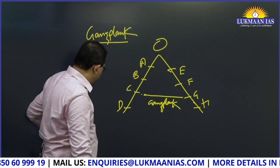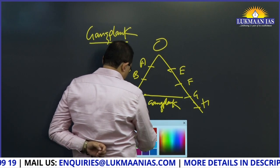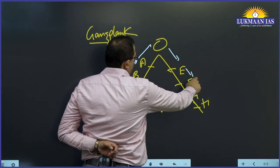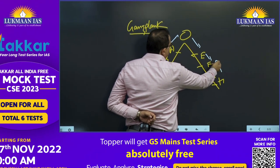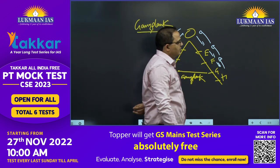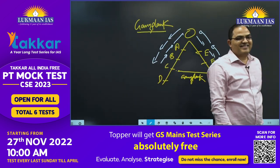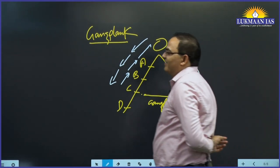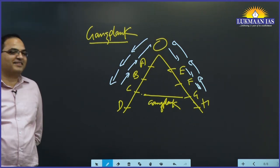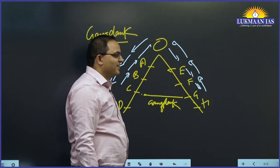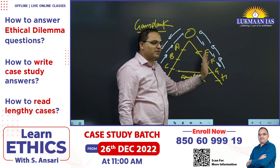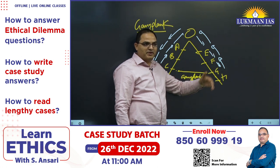C will talk to B, then A, then O — going through the entire hierarchy. By the time a response comes, he is practically retired! And what C intends to talk to G — going through all of them — you know what will happen ultimately?